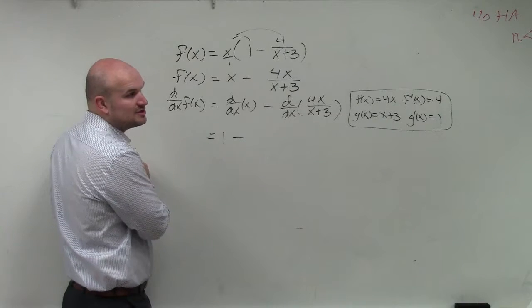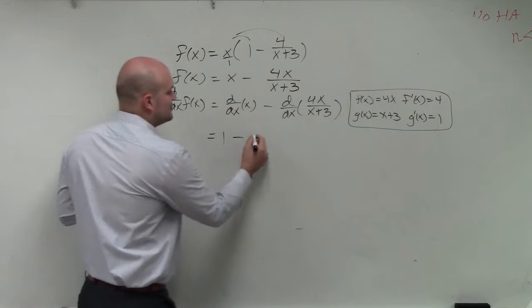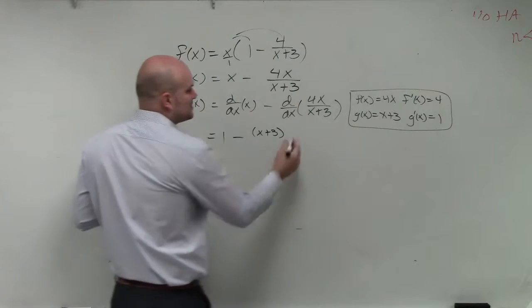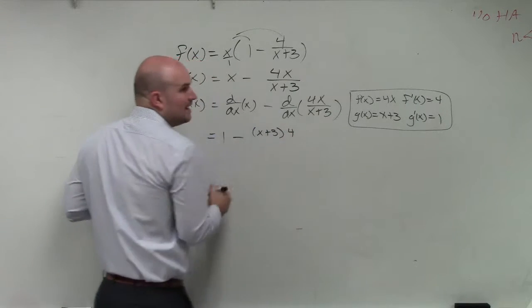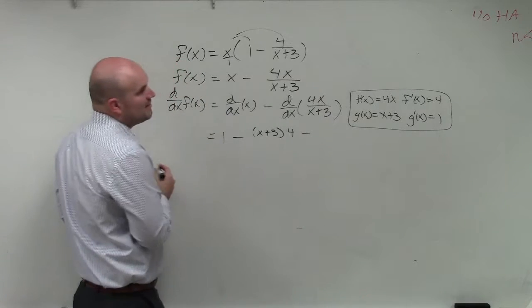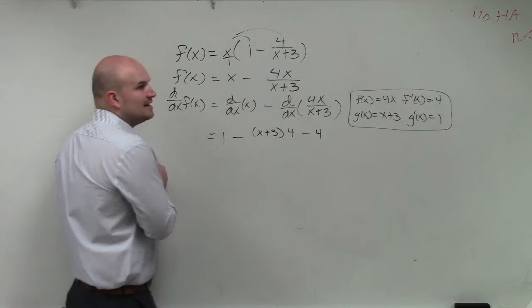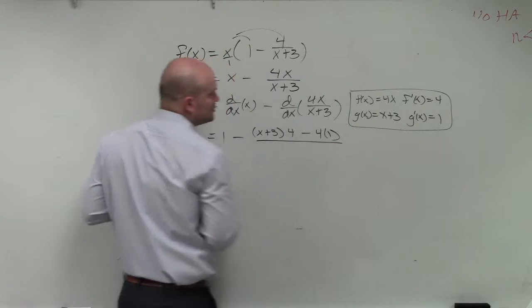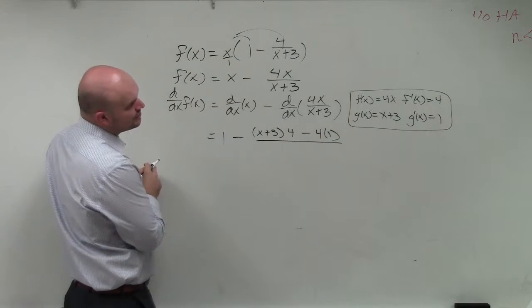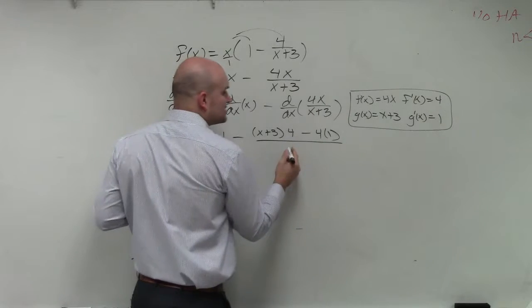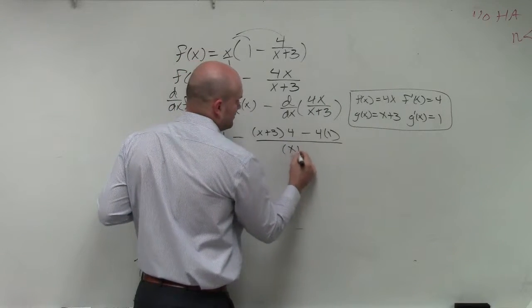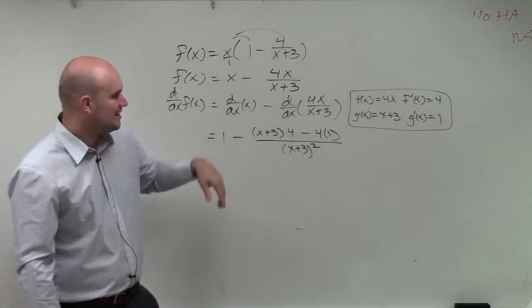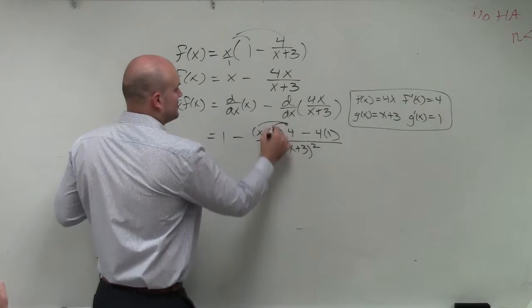Now basically, what I need to do is apply the quotient rule. So we have g(x) times f'(x), which is x plus 3 times 4, minus f(x) times g'(x), which is 4x times 1, all over g(x) squared, which is x plus 3 squared. And then without further simplifying, we could distribute powers.